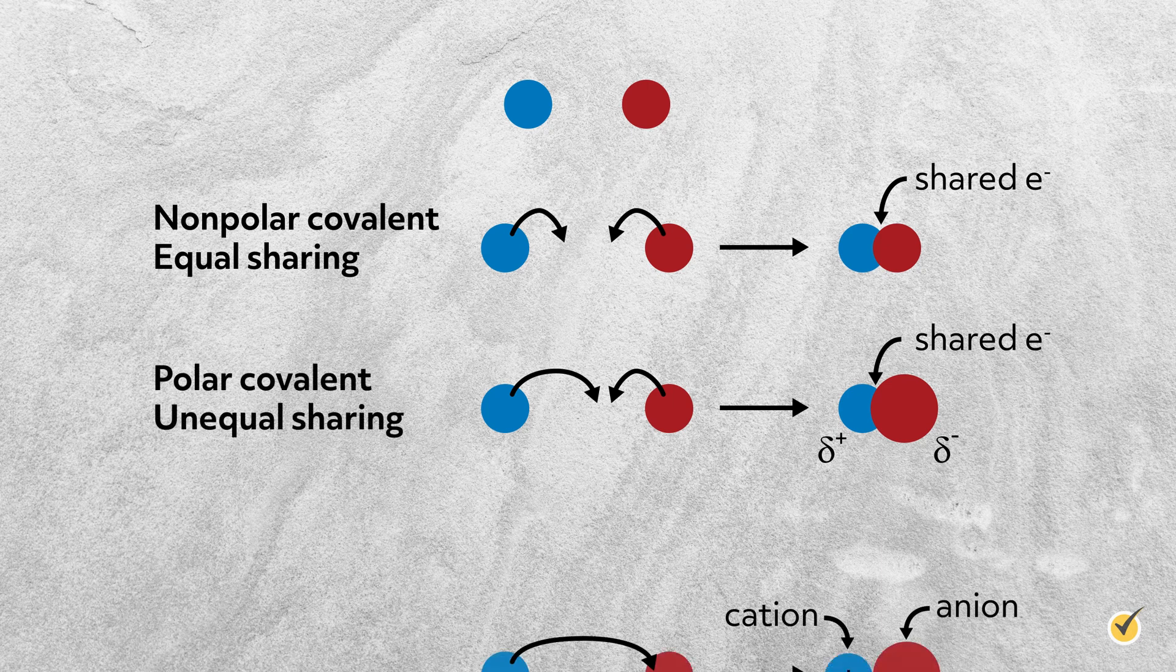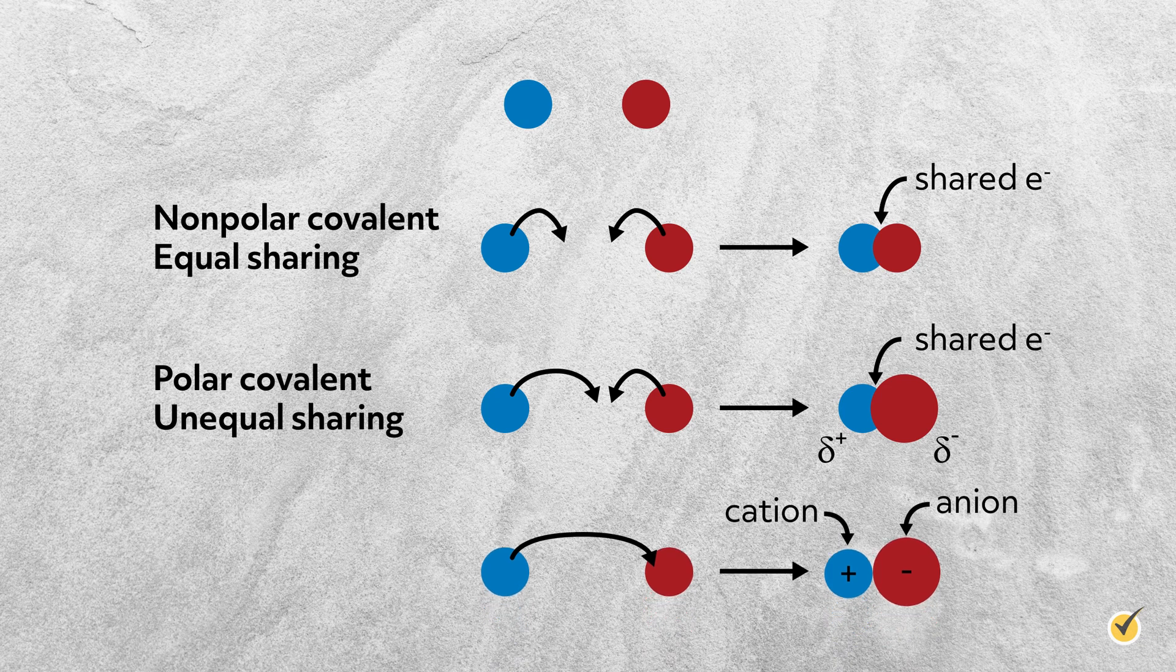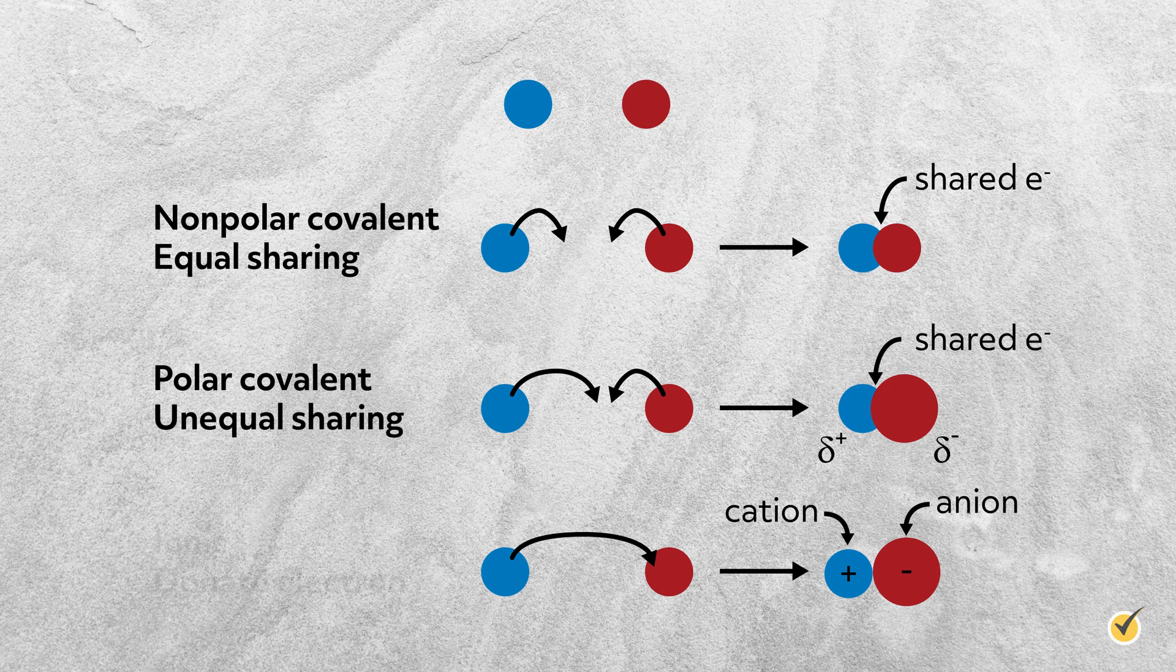And lastly, imagine where one atom pulls on the electrons so much that rather than sharing electron density, it just takes an electron from the other atom. This is an ionic bond, the focus of this video. I started with this introduction to put ionic bonds into perspective, and to remind you that all chemical interactions are almost always on a spectrum.